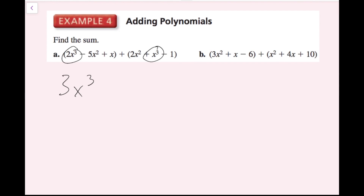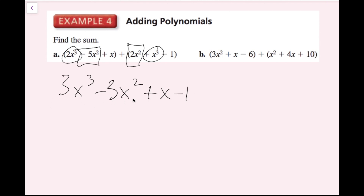The result is 3x cubed minus 3x squared plus x minus 1. Notice this is written in standard form, starting with the cubed term, then squared, then linear, then constant. The answer should always be in standard form.